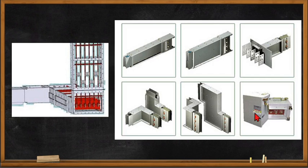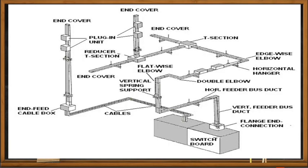This is an assembly of a busway showing its components: the feeders, the flange end, elbows (including a double elbow), and the power box or circuit breaker box attached to the feeder. This is a complete run of a busway system. Starting from the main switchboard or main distribution board, we have the flange and connection, vertical and horizontal feeders supported by a vertical spring support.